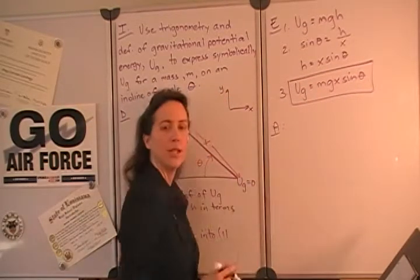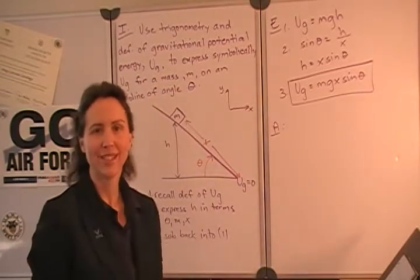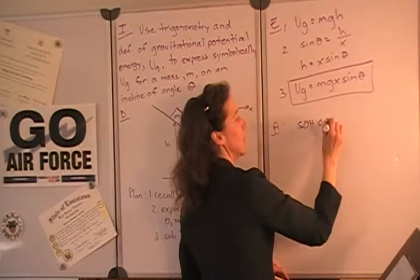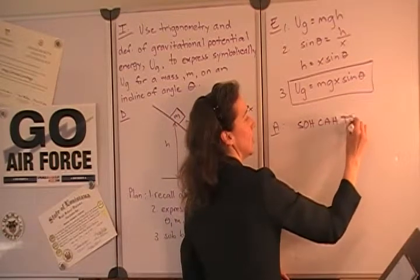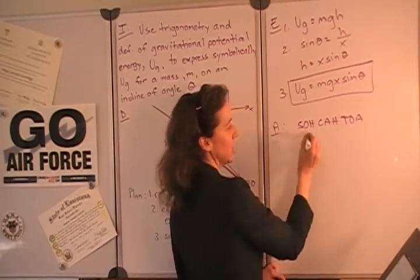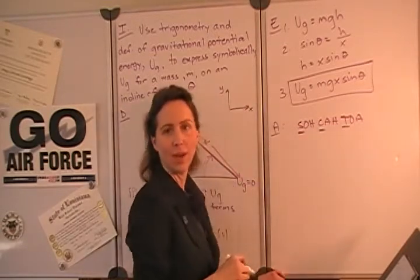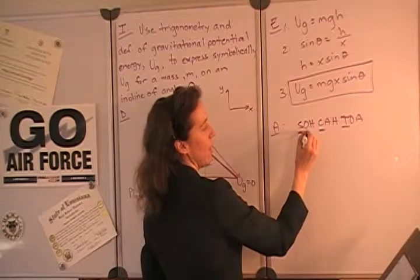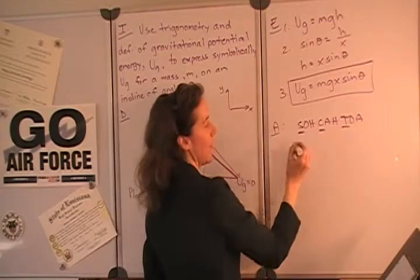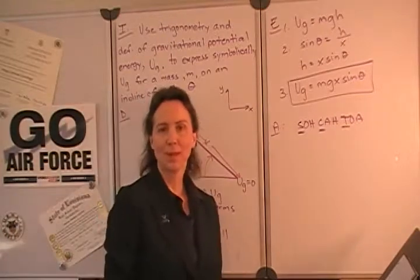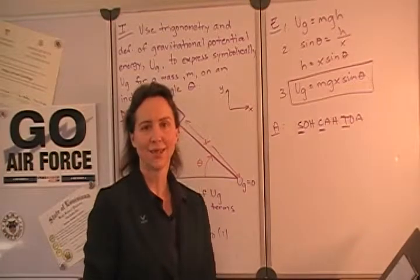As we assess our answer, a good way to do this, if you hadn't already written it on your paper, is the acronym SOHCAHTOA, which is helpful for remembering the relationships between sine, cosine, and tangent and the sides of a triangle. In our case, the sine is equal to the ratio of the opposite side over the hypotenuse, which is what we did. And since that's easy to mess up, it's a good thing to double check as you assess your answer.